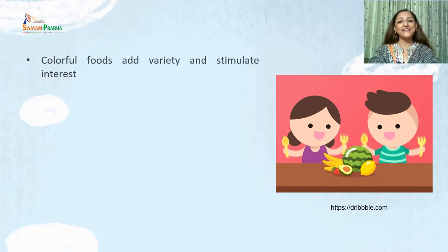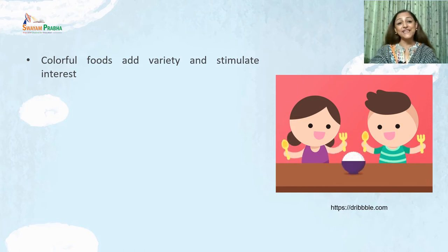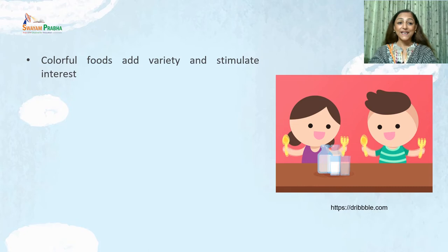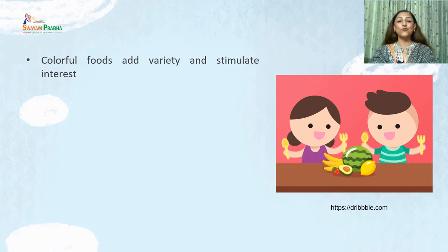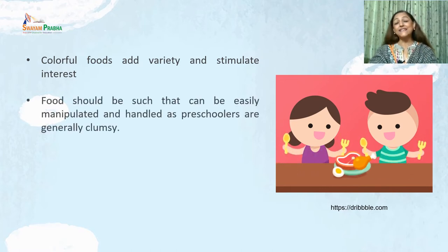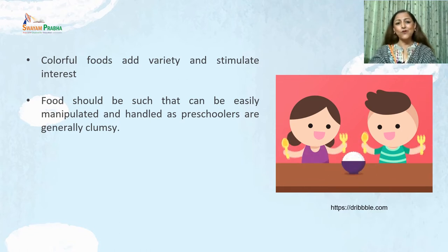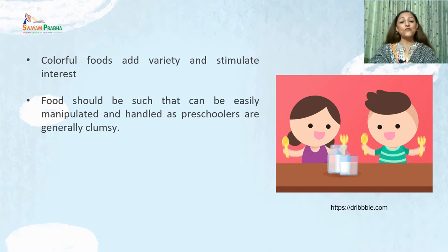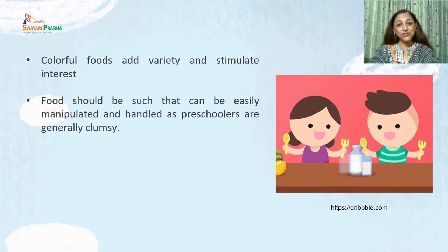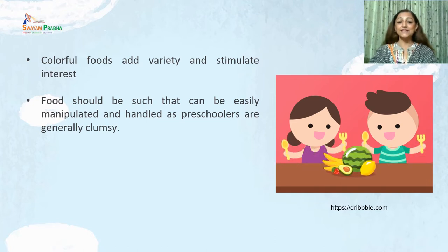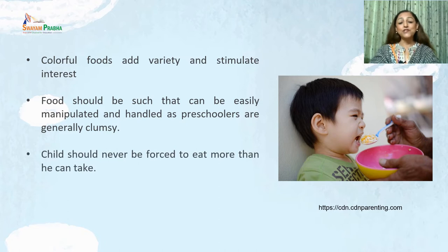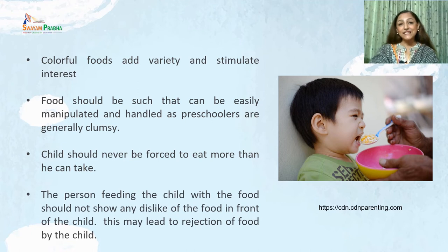Colorful foods add variety and stimulate interest. Chapatis or purees can be made in different colors by incorporating green vegetables, or served in attractive plates. The flavor and color of milk can be changed to encourage the child to drink it. Food can be made into different shapes to make it interesting. The food should be easily manipulated by the child, since preschoolers are generally clumsy. Finger foods like cutlets, hard-boiled eggs, small sandwich rolls, or whole fruits are easy to pick and eat. The person feeding the child should not show dislikes about food in front of the child, as this may lead to rejection.